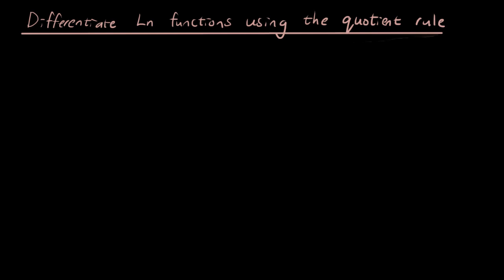In this video we're going to show you how to differentiate a natural log function that requires using the quotient rule. So let's give you the function first. The function is y equals ln x divided by cosine x and we want to know how to differentiate this function.